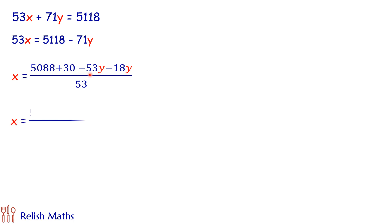Now, taking 5088 and minus 53y on one side and remaining terms on the other side. So we have segregated them so that 5088 is fully divisible by 53. So we are getting here 96 is from this term.